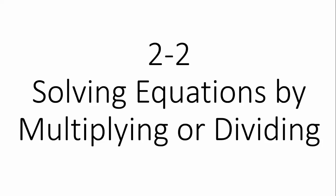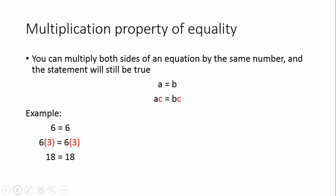Section 2.2 is titled Solving Equations by Multiplying or Dividing. We want to talk about two properties again. The multiplication property of equality, which says that you can multiply both sides of an equation by the same number, and this statement will still be true.